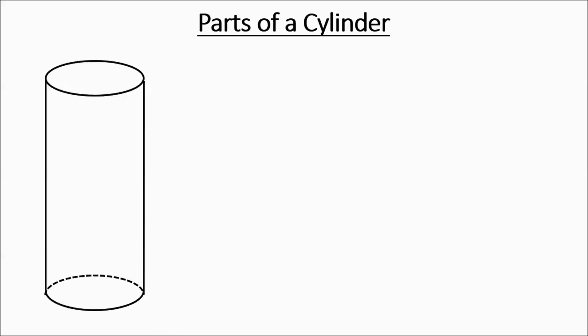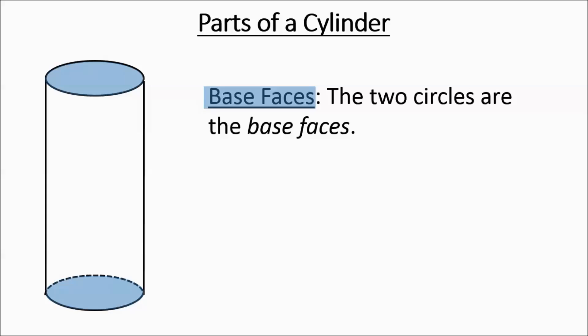Parts of a cylinder. You need to know the base faces. Those are, in this case, these are the two circles in the figure. You've got a top base and a bottom base. Now a cylinder's not always straight up and down, it could be on its side. The circles will always be the base faces.